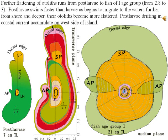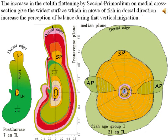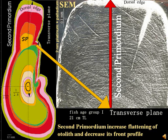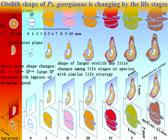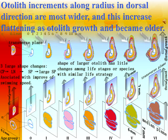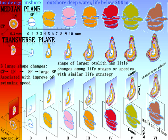Further flattening of otoliths runs from post-larvae to fish of one age group. Post-larvae swim faster than larvae and begin migrating to waters farther from shore and deeper; their otoliths become more flattened. The increase in otolith flattening by the second primordium on the medial cross section gives the widest surface, which during dorsal fish movement increases perception of balance during vertical migration. The second primordium increases otolith flattening and decreases its frontal profile. Three large changes of shape — central primordium, larval nucleus, and second primordium — are associated with improvement of swimming speed.